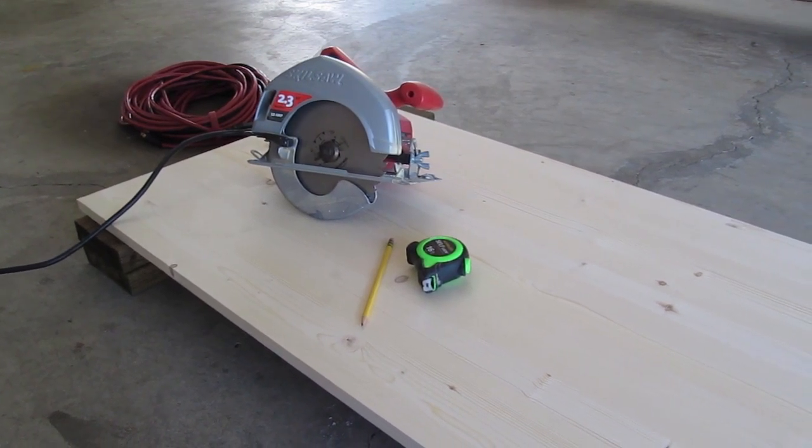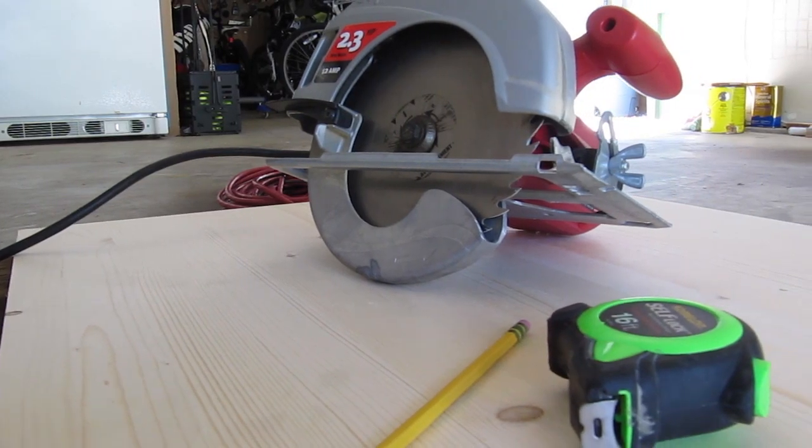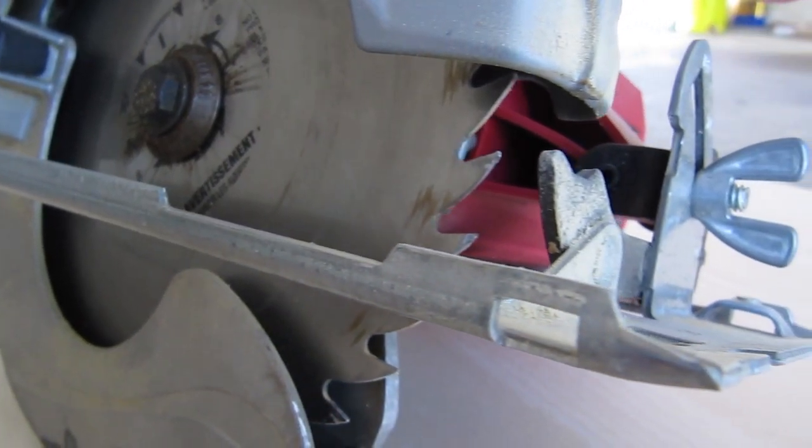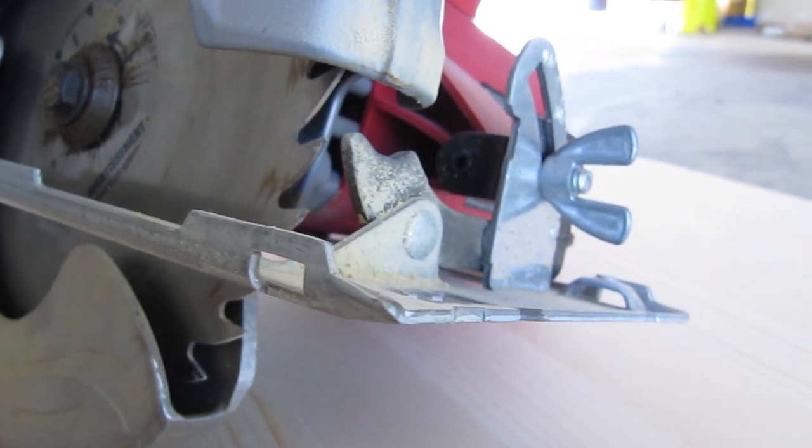Today I'm working on shelves for a TV cabinet I'm building which require straight cuts with a circular saw. Circular saws are rather crude but it's possible to make clean cuts with the help of things you might have lying around in the garage.